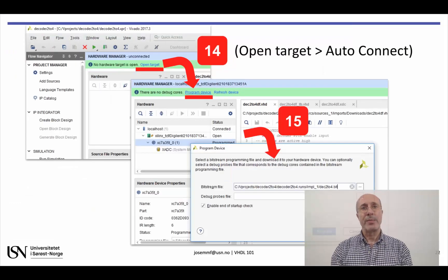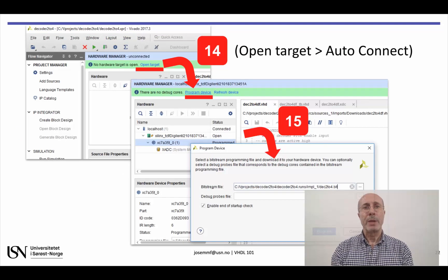And we have reached the final step. After opening the hardware manager, we have to click on Open Target and then Program Device. The bitstream file name shows by default, and all we have to do is to click on Program.